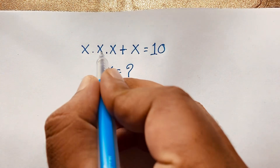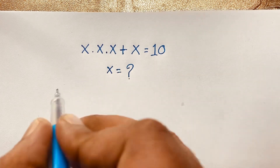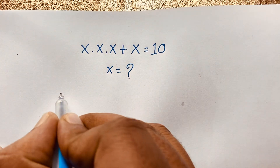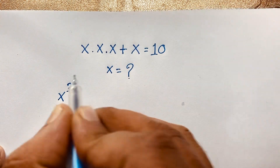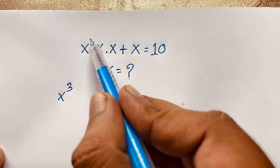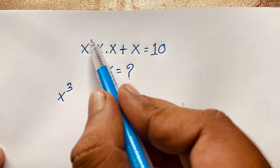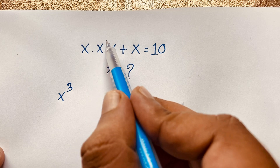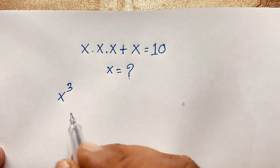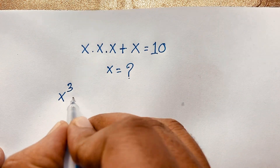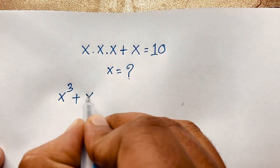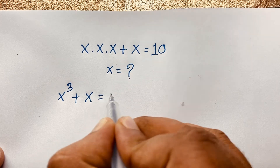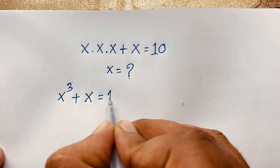x times x times x equals x to the power 3, because the exponent is 1 plus 1 plus 1, which equals 3. So the expression becomes x to the power 3 plus x is equal to 10.